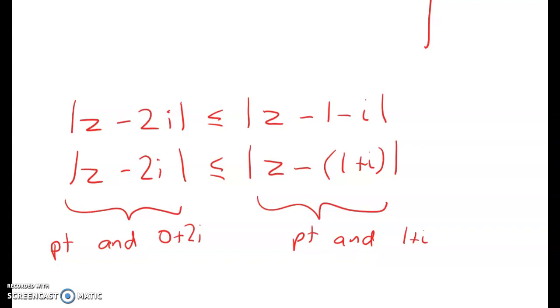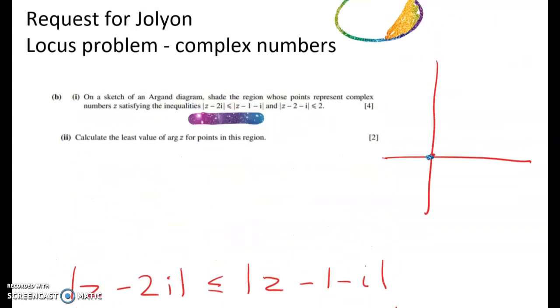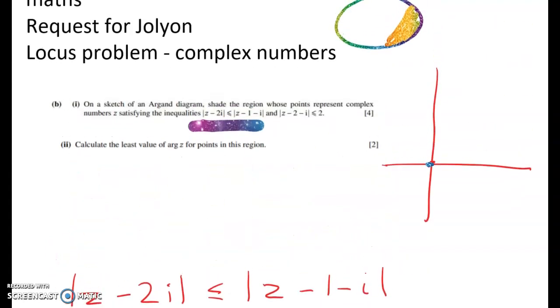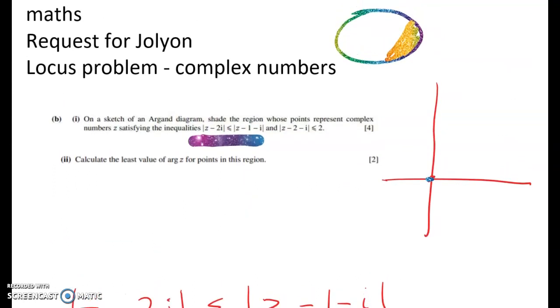Now we can interpret this as saying this side is the distance between a point and 0 plus 2i, and this side is the distance between a point and 1 plus i. So we've got our perpendicular bisector pattern coming here. Let's go to our very bad graph. I'm going to show you how bad it is when you draw a bad graph, that it makes it really hard to see. So let's just put on, without a ruler, these markings. We should say what they are. So we've got 1, 2, 3, i, 2i, 3i.